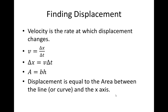Finding displacement on a velocity time graph is a little different. Velocity is the rate at which displacement changes: V = ΔX / ΔT. Rearranging, you get ΔX = V · ΔT. Since area equals base times height, and on a velocity time graph you have velocity on the Y axis and time on the X axis, displacement is simply the area between the line or curve and the X axis.